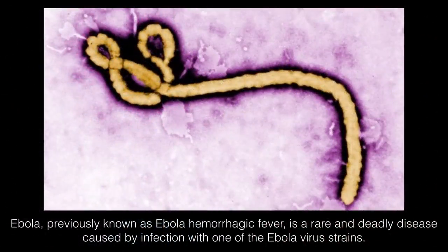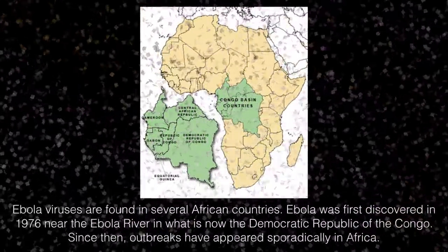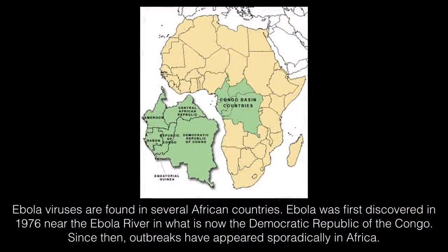Ebola, previously known as Ebola hemorrhagic fever, is a rare and deadly disease caused by infection with one of the Ebola virus strains. Ebola viruses are found in several African countries. Ebola was first discovered in 1976 near the Ebola River, in what is now the Democratic Republic of the Congo. Since then, outbreaks have appeared sporadically in Africa.